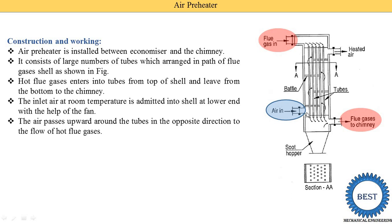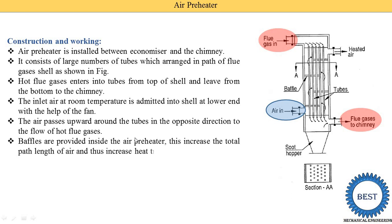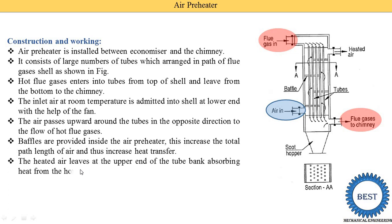The air passes upward around the tubes in the opposite direction to the flow of hot flue gases — flue gases move from top to bottom, while air moves from bottom to top, making it a counter-flow arrangement. Baffles are provided inside the air preheater to increase the total path length of the air, which increases heat transfer. The heated air then leaves from the upper end of the tube bank after absorbing heat from the hot flue gases, and is supplied to the boiler.